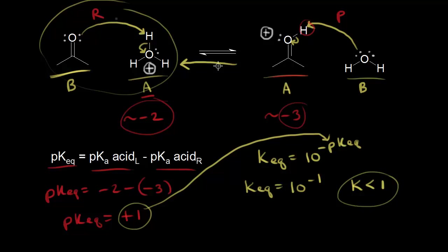We can also use the shorter method to find the position of equilibrium. Look at the pKa values: on the left we have negative 2, on the right we have negative 3. The equilibrium favors the formation of the acid with the higher pKa value — the weaker acid. Negative 2 is closer to zero than negative 3, so negative 2 is the higher pKa, and the equilibrium favors the left. That's the fast way of determining equilibrium position using pKa values.